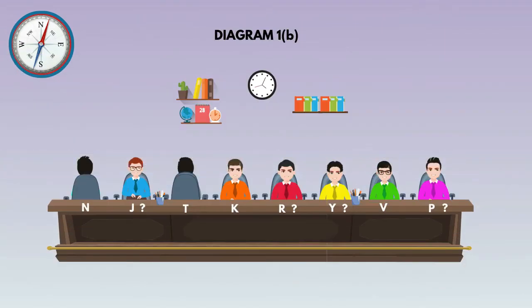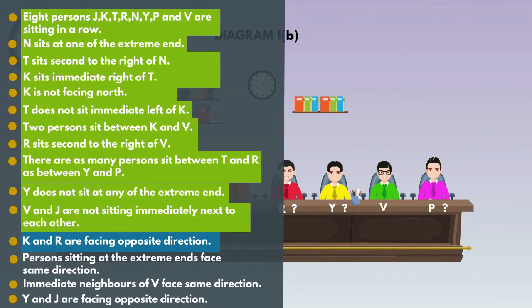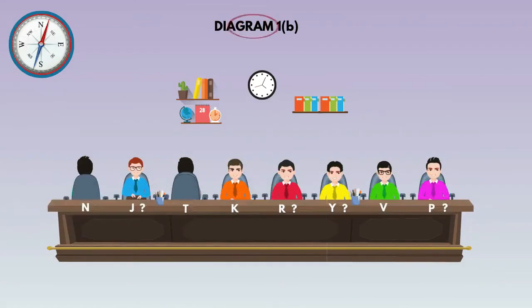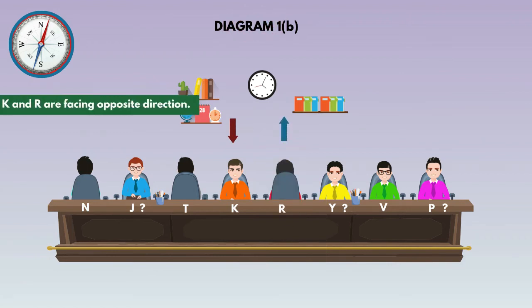Go to the next statement: K and R are facing opposite direction. In diagram 1B, K faces south direction, so R must face north direction because K and R are facing opposite direction.